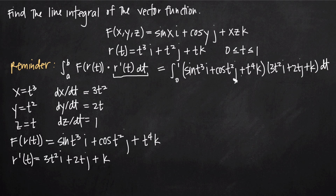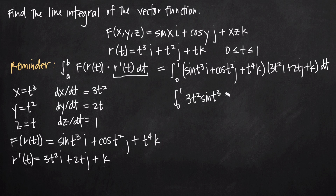Now we simplify the integral. When multiplying vectors in this way, we multiply the coefficients of matching unit vectors and add the results: sin(t³)·3t² for the i terms, cos(t²)·2t for the j terms, and t⁴·1 for the k terms. This gives the integral from 0 to 1 of (3t²·sin(t³) + 2t·cos(t²) + t⁴) dt.